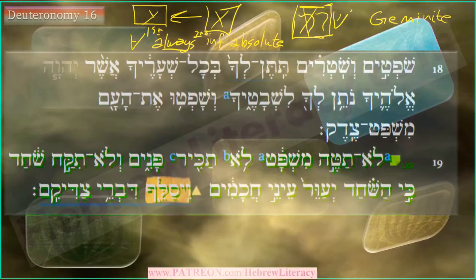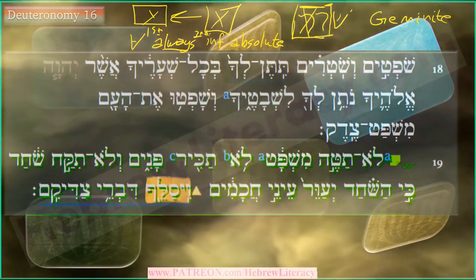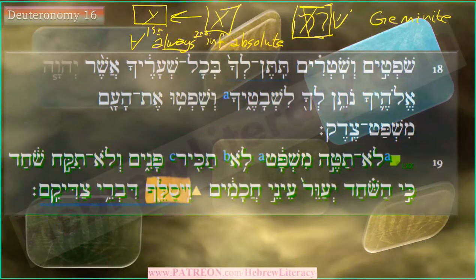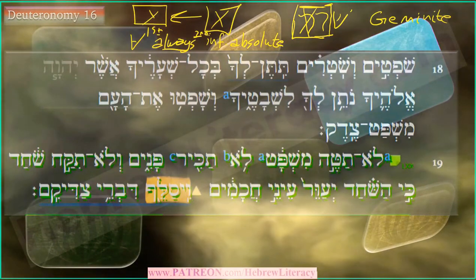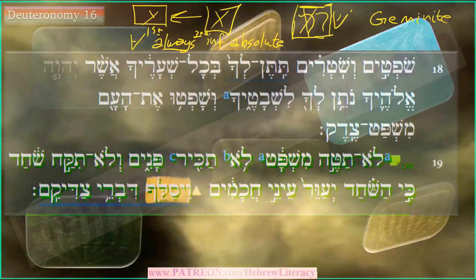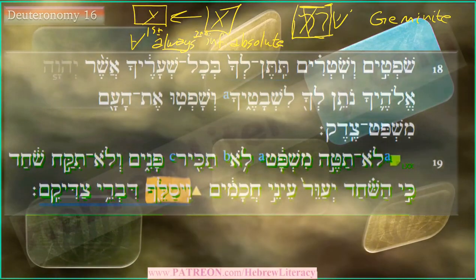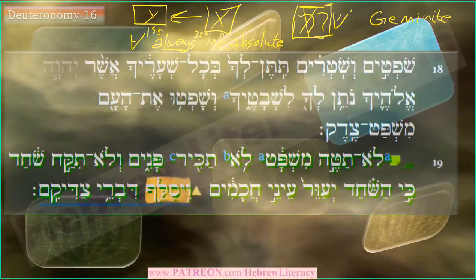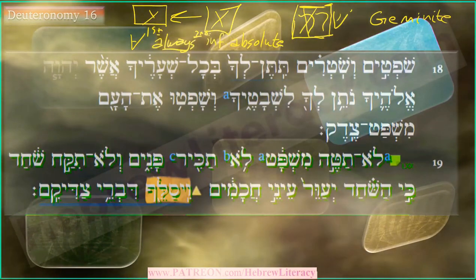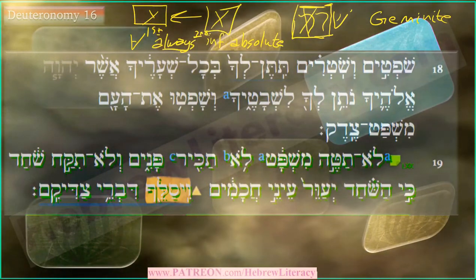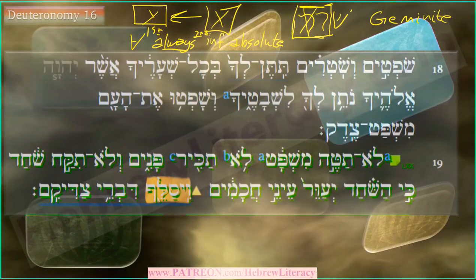Another example is the verb 'shatat' — shin, bet, tet — where in certain conjugations you see the root doubled. The infinitive absolute does this doubling; the infinitive construct does not. Only the infinitive absolute has this need to double the root.